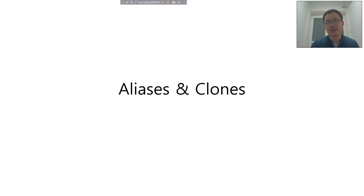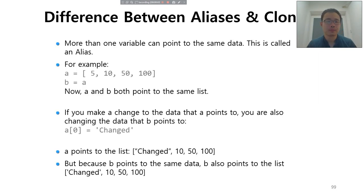Now we talk about aliases and clones. Alias means that more than one variable can point to the same data.